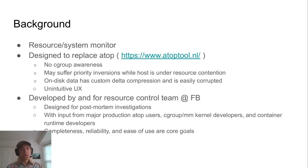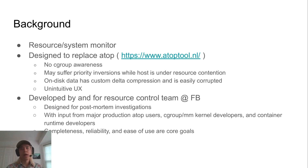So, background. BELOW is a resource and system monitor. What that means is BELOW records information like processes running, cgroups active, the names of the processes, the names of the cgroups, swap in, swap out, network activity — information like that.